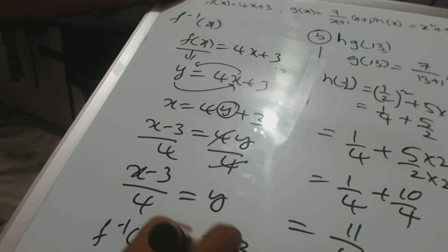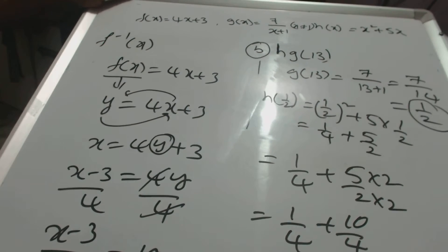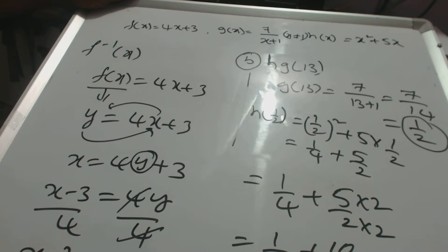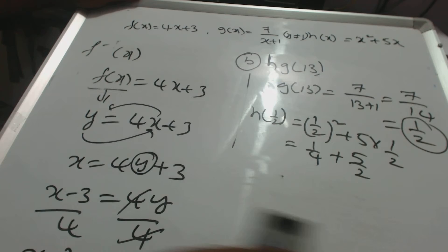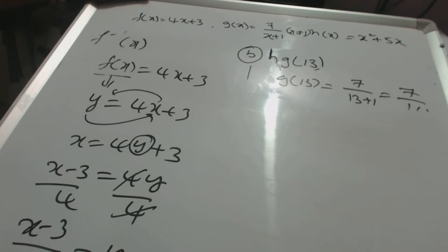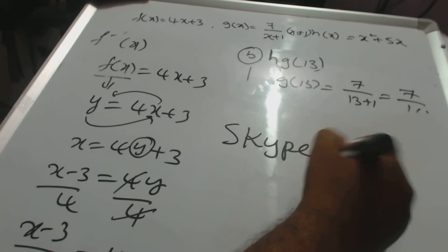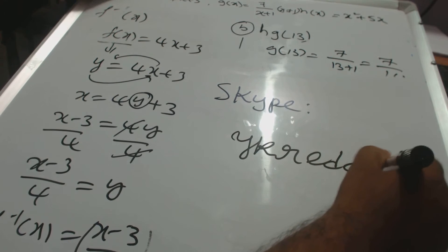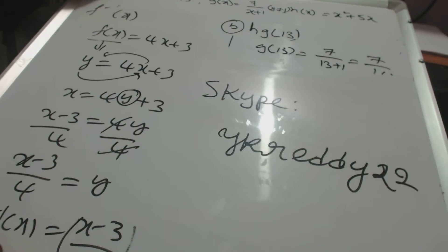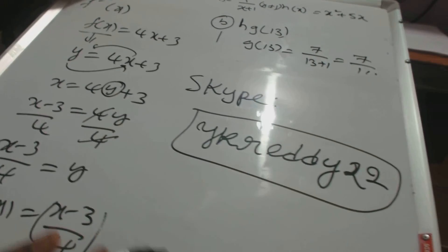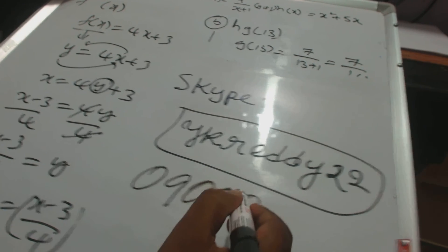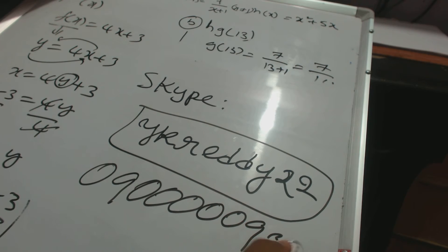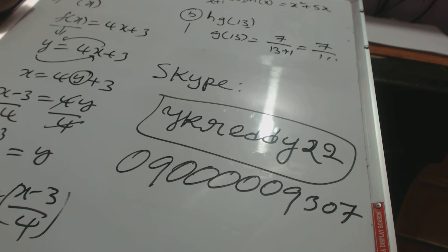I am an IGCSE math tutor. If anyone requires online math tutoring for IGCSE, IB, SAT, or any mathematics topics, please contact me on Skype. My Skype address is ykreddy2, or you can call my mobile number: 093000009307. Thank you.